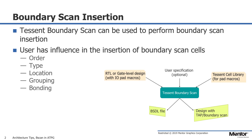Additional user controls include grouping of the boundary scan cells and multiple bonding configurations if desired. Tessent boundary scan then inserts the boundary scan cells into the design and connects them to the 1149.1 or 1149.6 compliant TAP controller. A BSDL (boundary scan description language) file describing the boundary scan insertion is also generated.